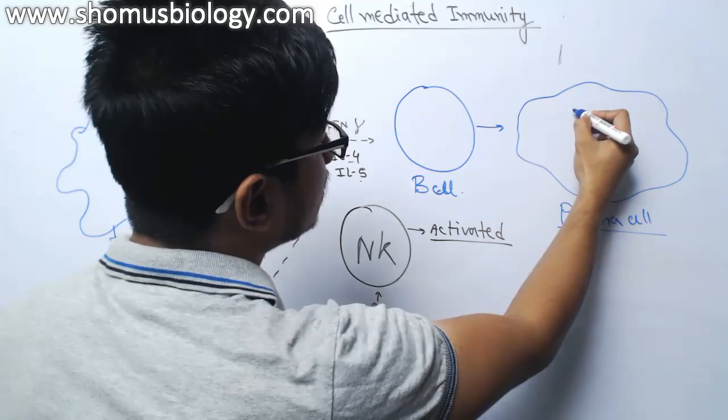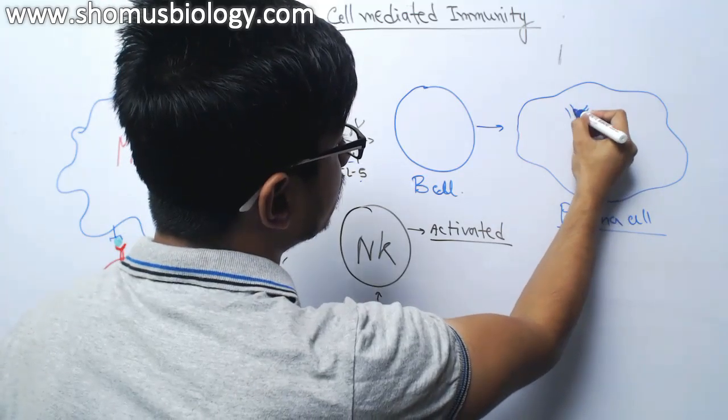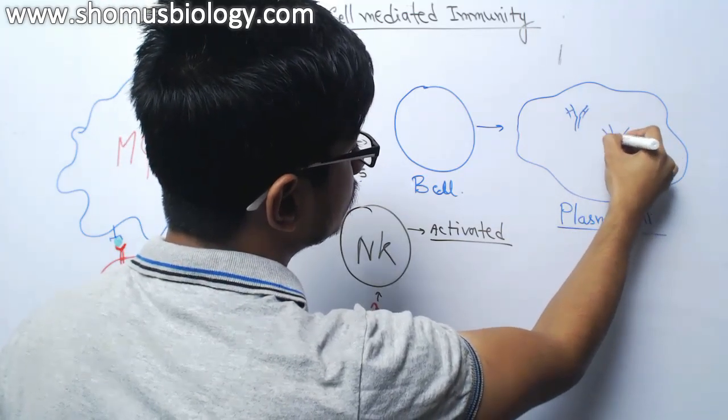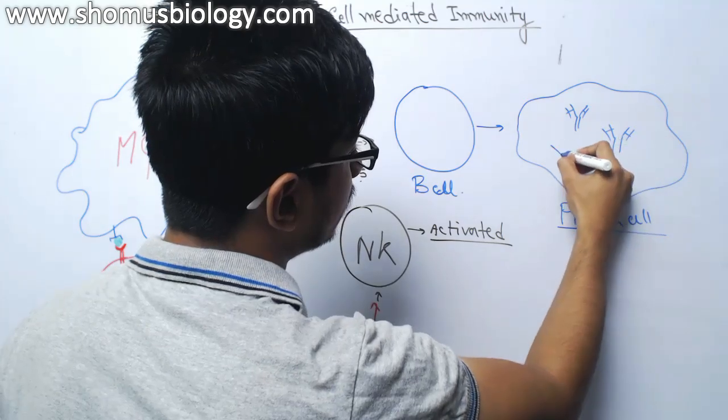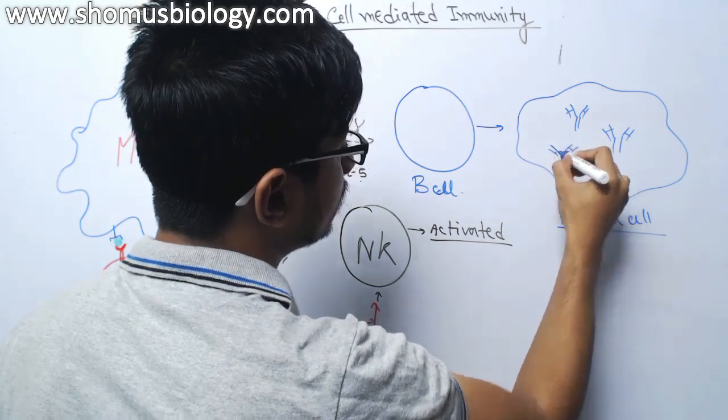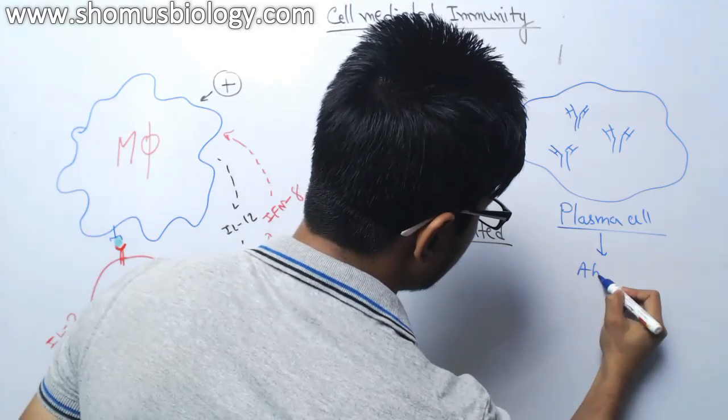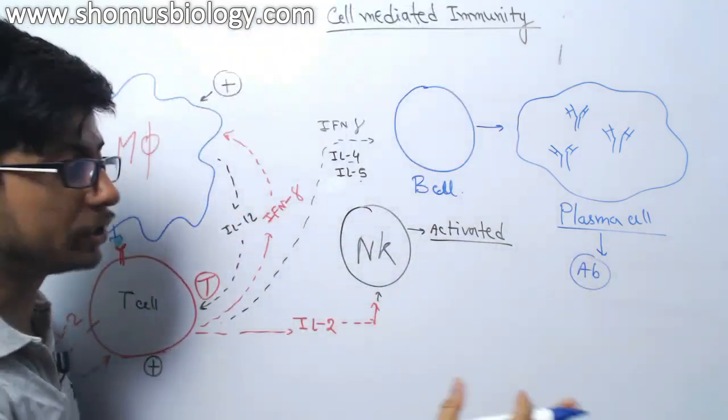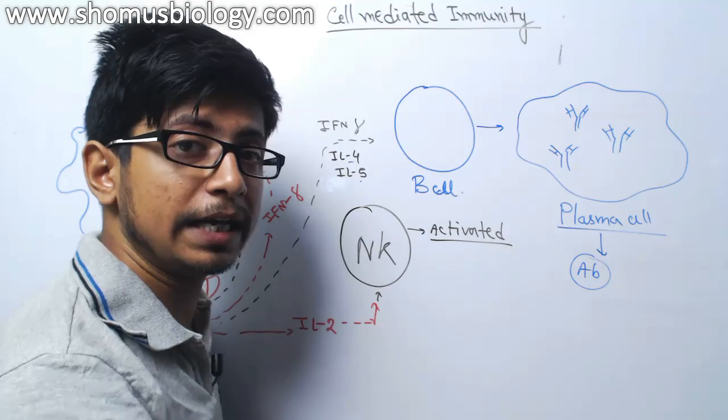You know, plasma cells are antibody secreting factories, right? They are rich with antibodies. So now they can produce antibody mediated immunity, which is a part of humoral immunity.